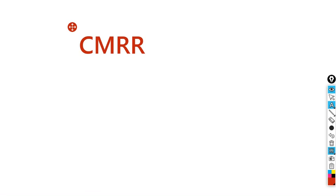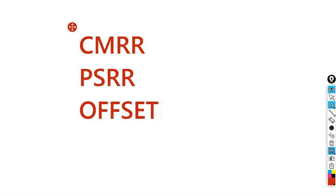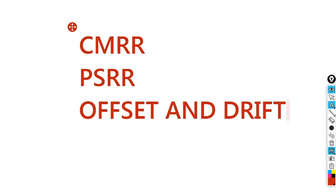The three properties we are going to see in this class are: common mode rejection ratio, power supply rejection ratio, and third one is offset and drift.